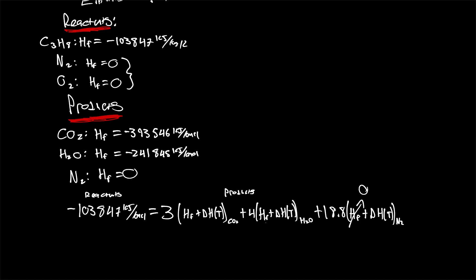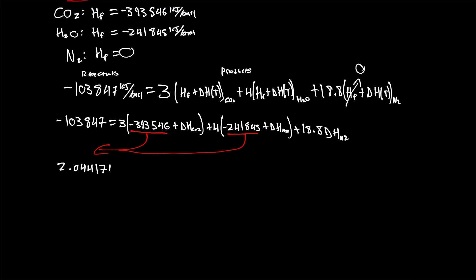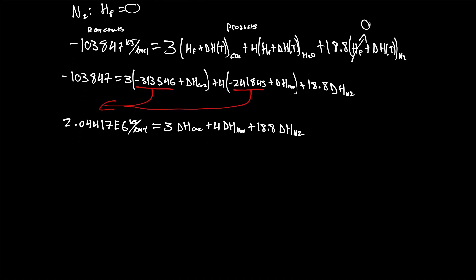And now we just plug in the enthalpy of formations for each one, and we need to make sure that the left-hand side equals the right-hand side to get our adiabatic flame temperature. So we're going to be moving these enthalpies of formation onto the other side so that we can solve strictly based on our adiabatic flame temperatures. Therefore, we know that approximately 2,044,170 kilojoules per kilomole should be equal to 3 times the change in enthalpy of CO2 for the change in temperature plus 4 times the change in enthalpy of H2O for the change in temperature plus 18.8 times the change in enthalpy for diatomic nitrogen for the given adiabatic flame temperature.